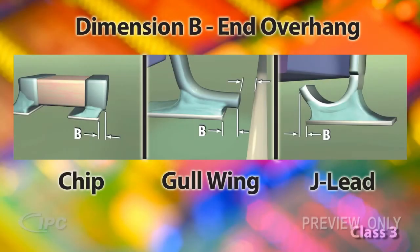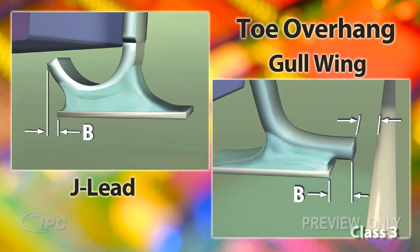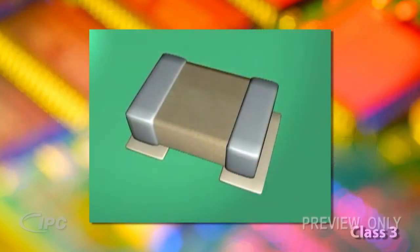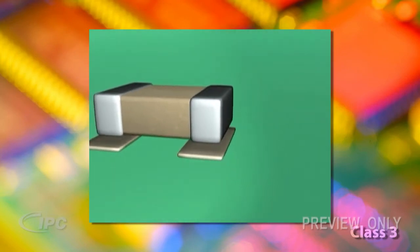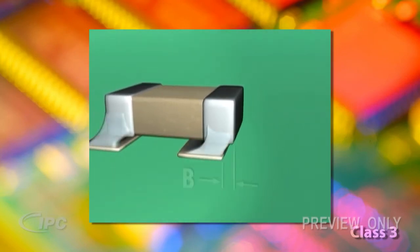The next parameter we'll examine is End Overhang, or Dimension B. This dimension is called Tow Overhang for J-lead and Gullwing components. For chip components, any part of the termination extending beyond the land is a defect.